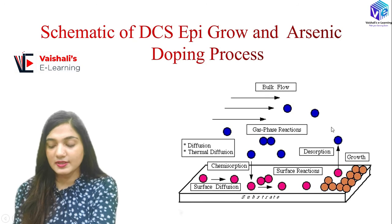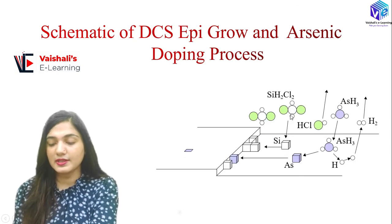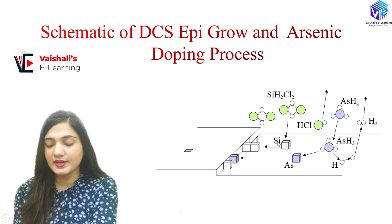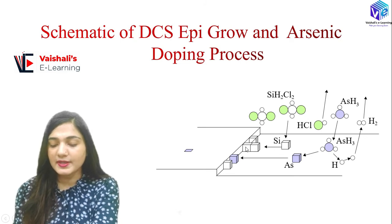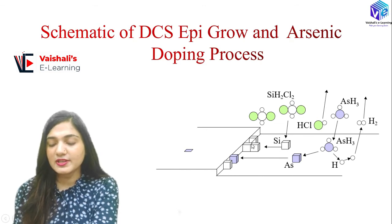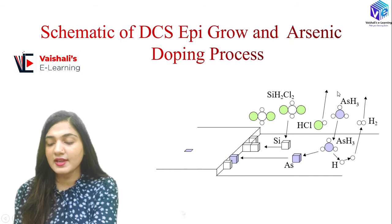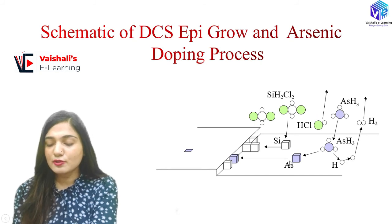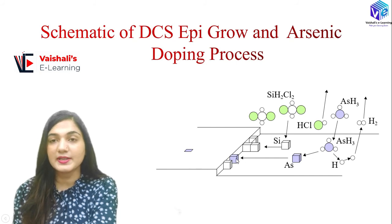In the pictorial representation: dichlorosilane has 2 green chlorine atoms, small hydrogen atoms, and a silicon atom. When dissociated at 1100°C, it provides silicon in the solid phase as an epitaxial layer. For AsH₃, the blue atom is arsenic with 3 hydrogen atoms. When dissociated, it gives arsenic as a dopant in the epitaxial layer.